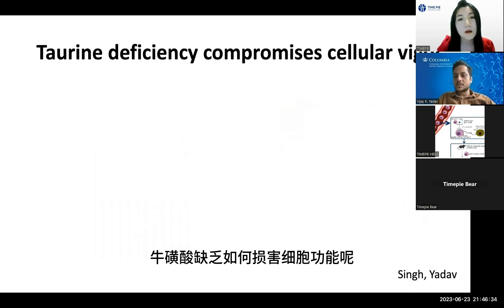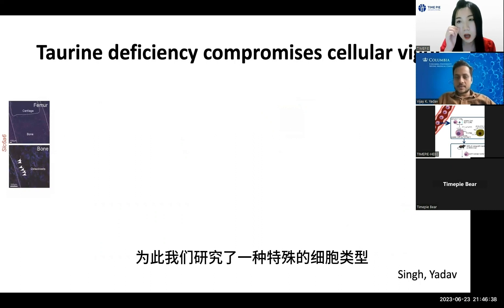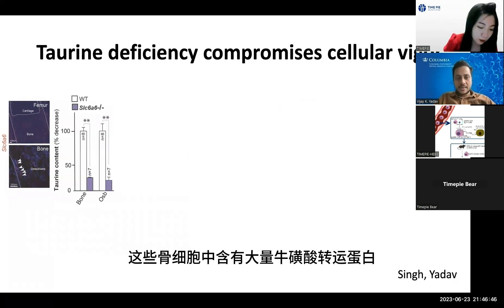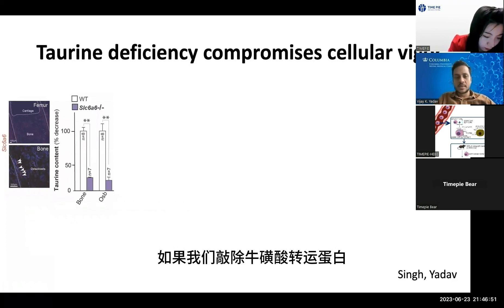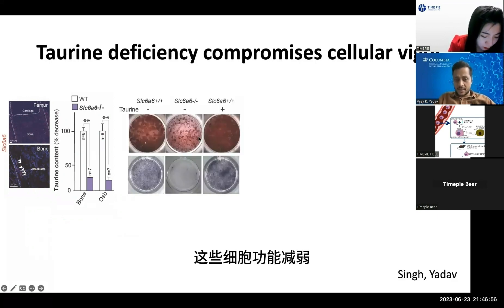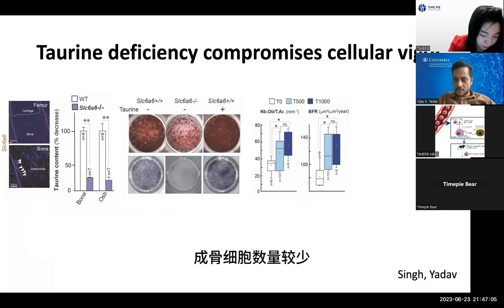How does taurine deficiency compromise cellular functions? To examine this, we looked at bone cells, which make bone. These bone cells express a lot of taurine transporter, and if you knock out the taurine transporter, taurine goes down in these cells. These cells function less — they have less ability to mineralize bone and function less in vivo. They have fewer osteoblast numbers and less ability to form new bone.